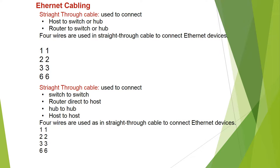In this lecture, we will be discussing Ethernet cabling. Straight-through cable is used to connect host to switch or hub, and router to switch or hub.